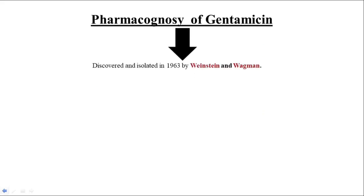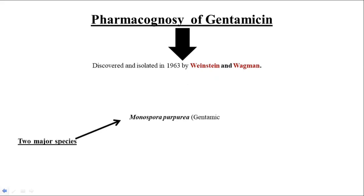Now let's talk about the pharmacognosy of gentamicin. It was discovered and isolated in 1963 by Weinstein and Weigmann. There are two major species from which gentamicin is isolated: one is Microspora purpurea and the second is Streptomyces species. The main difference between them is in the spellings — one is with 'mi' and one is with 'my'.